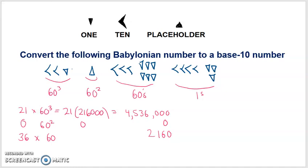And lastly, in the 1s column, you've got 40, so four 10s and three 1s. So you've got 43 1s, 60 to the 0s, or 1s. So that adds 43. So to come up with the base 10 value of this Babylonian number, we just have to add the values, the values of the symbols in each grouping. We've got 4,536,000 plus 2160, and I'm just doing it on my calculator, plus 43 gives us a base 10 number of 4,538,203.